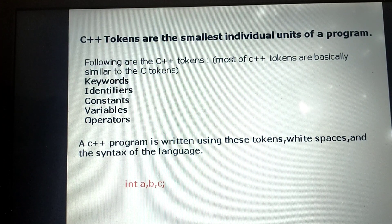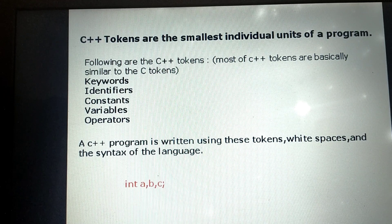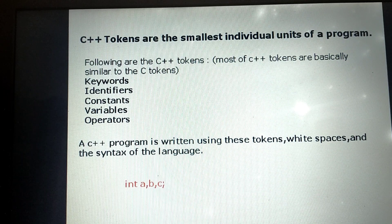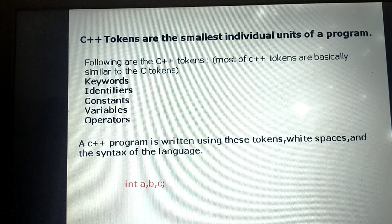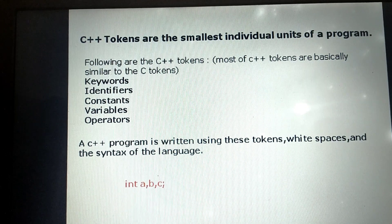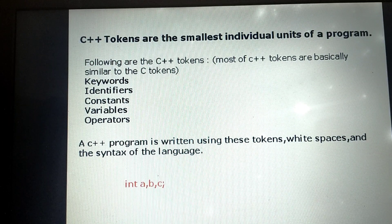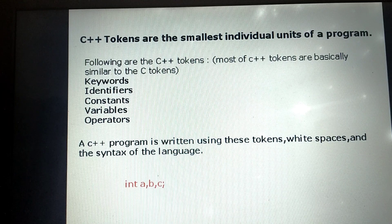Those who are new to programming may be confused with tokens — don't worry. I have uploaded separate videos on keywords and identifiers with detailed explanation: what is a keyword and identifier, how to use them, and what rules to follow. For constants, there is a separate video covering different types of constants and how to declare them. For variables also, I have uploaded a separate video covering how to write and declare variables, the rules to follow, and valid versus invalid variables.